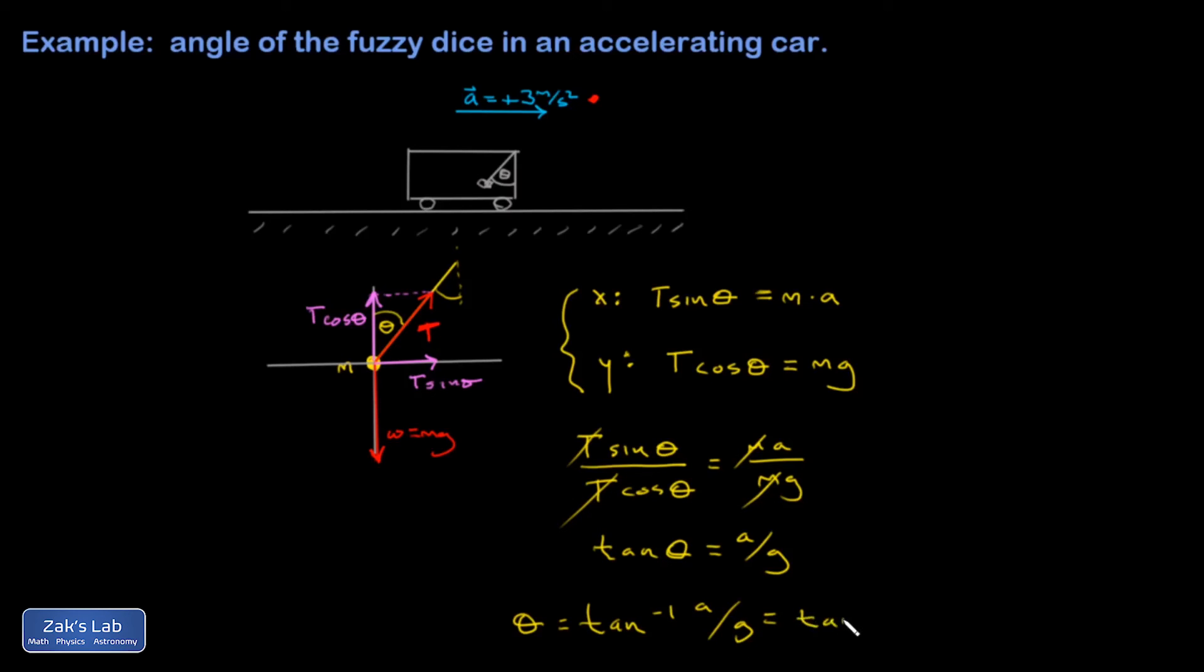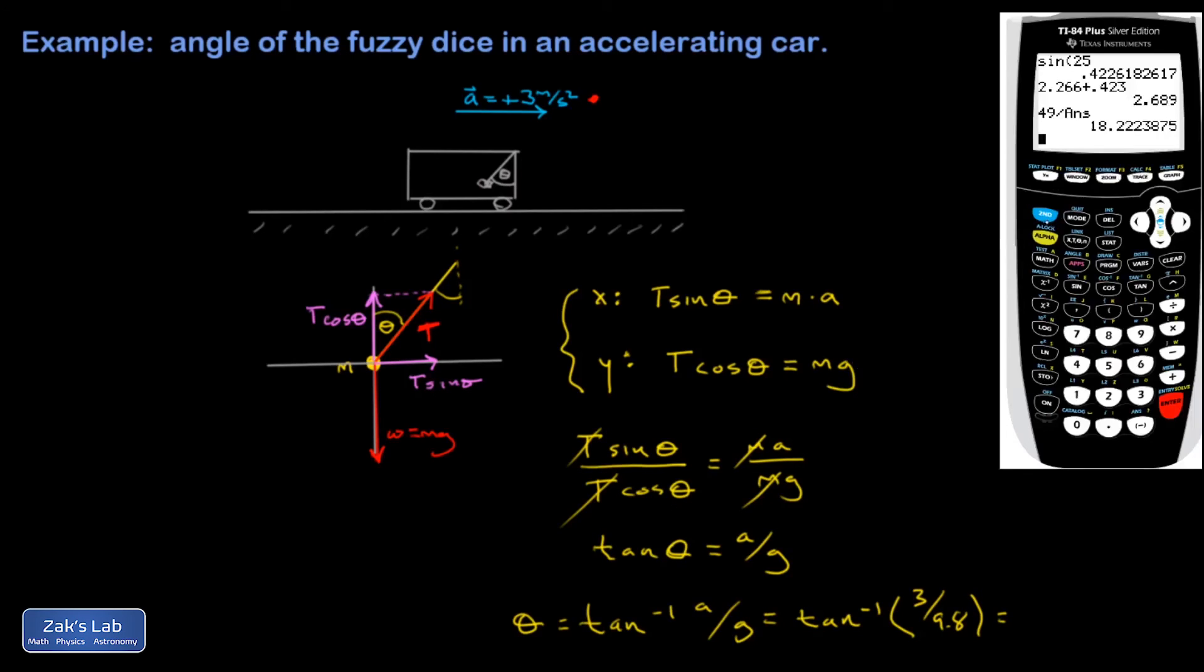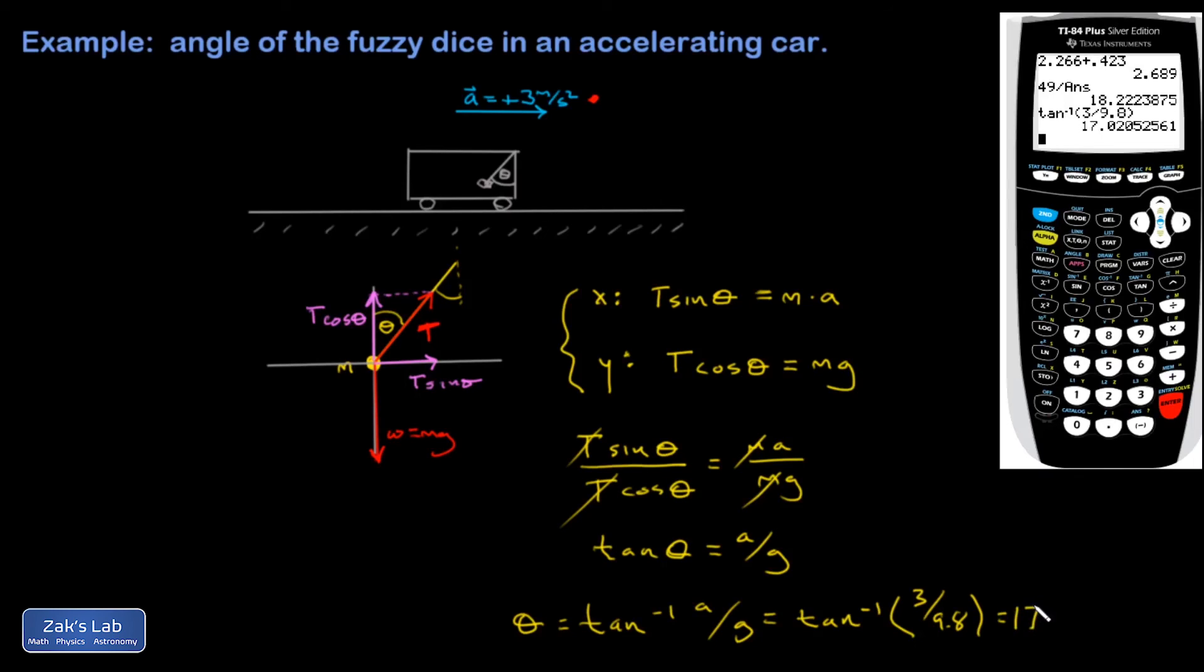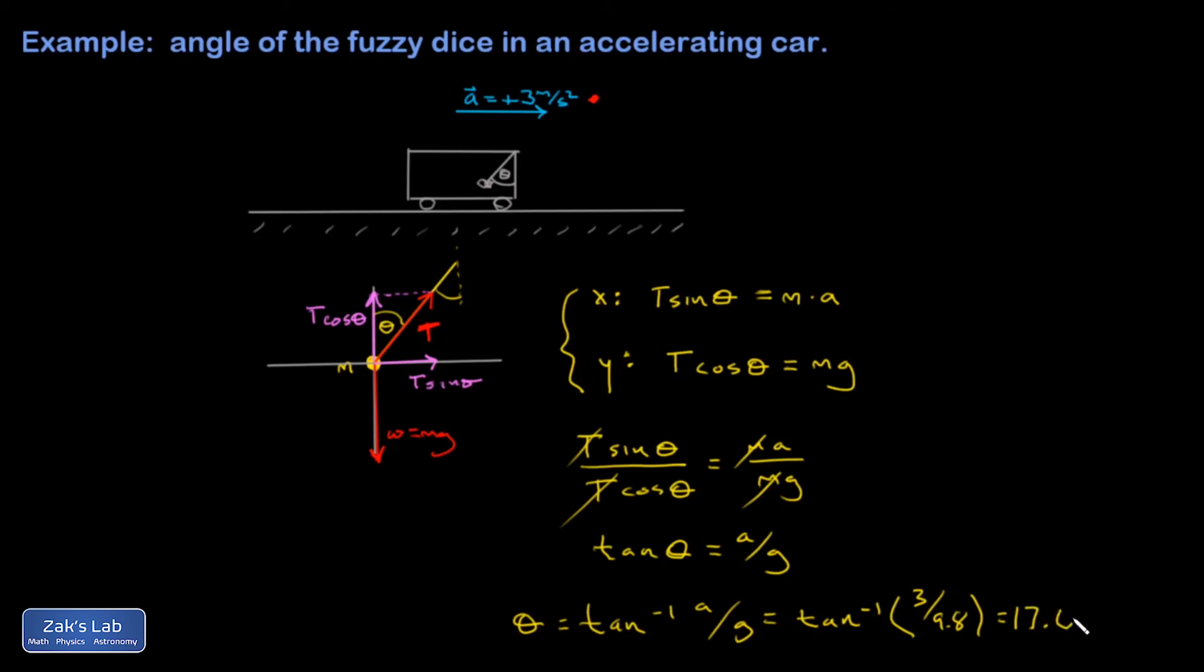We'll plug into that. The angle whose tangent is 3 over 9.8. I'll get my calculator up and go second tangent. So angle whose tangent is 3 divided by 9.8. And it turns out this fuzzy dice will hang with an angle of 17.0 degrees with respect to the vertical.